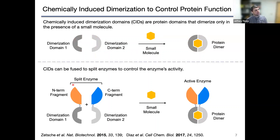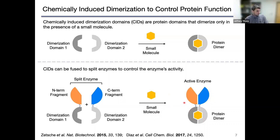Our strategy for developing an aminoacyl tRNA synthetase that could be activated on demand was to make use of chemically induced dimerization systems — protein domains that do not interact with each other on their own, but in the presence of a small molecule ligand assemble to form a stable dimer. These domains have been used to control the activity of many different enzymes: an enzyme is split into N-terminal and C-terminal fragments, and these fragments are genetically fused to one of the two dimerization domains. The N-terminal and C-terminal fragments are inactive by themselves, but in the presence of the small molecule, the domains assemble into a dimer, activating the enzyme. The small molecule acts as a molecular switch to turn the enzyme on. This has been done for many enzymes including RNA polymerases and proteases, and we wanted to know if we could use a similar strategy for an orthogonal aminoacyl tRNA synthetase.